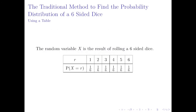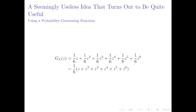So if we have a random variable x which represents the result of rolling a six-sided die, the traditional way to lay this out might be in a probability table such as this. So the probability of rolling a six is one over six, five is also one over six, and so on down to one, which is also one over six. And we're now going to introduce a seemingly useless idea that turns out to be quite useful, and that is a probability generating function.